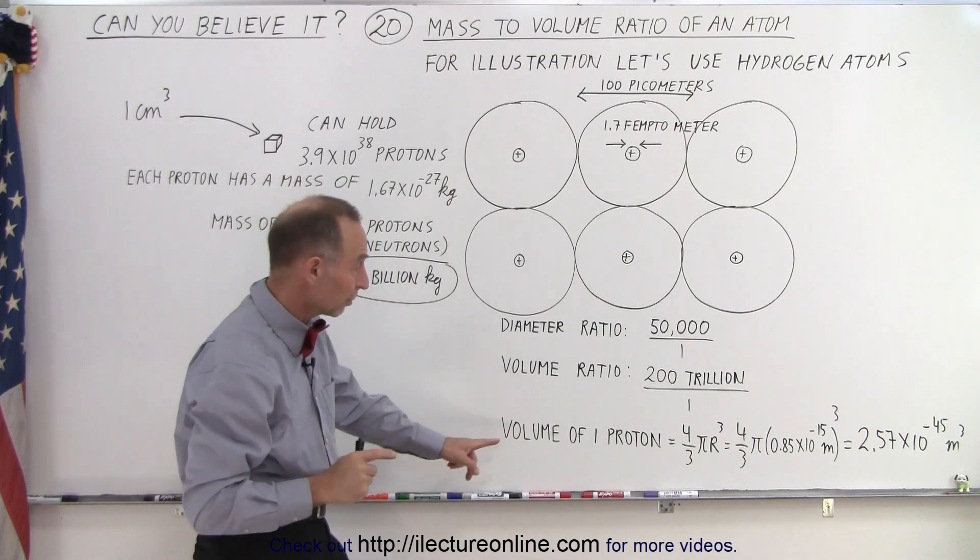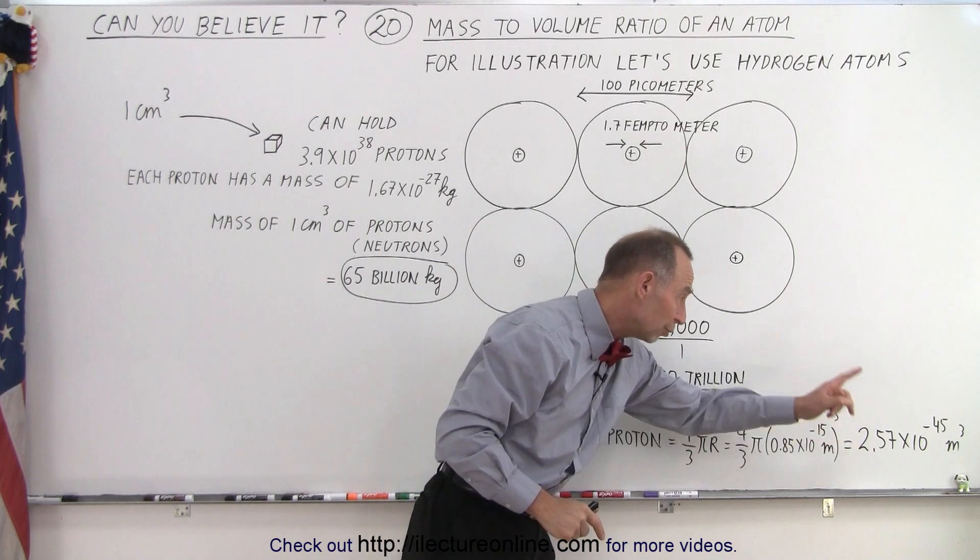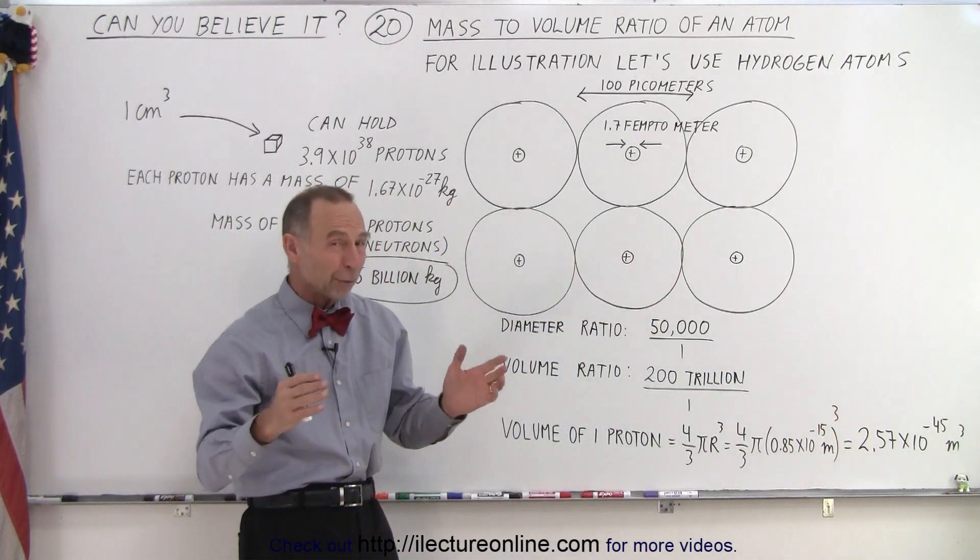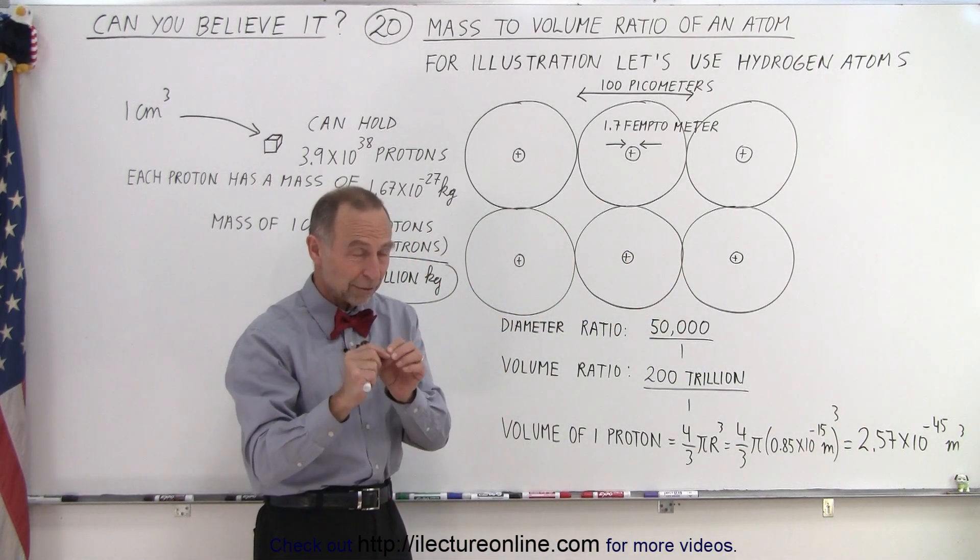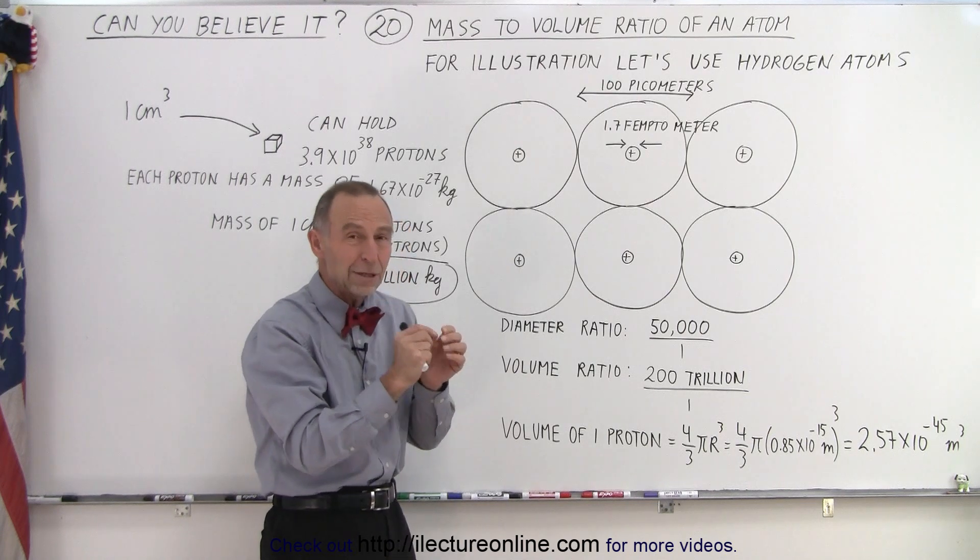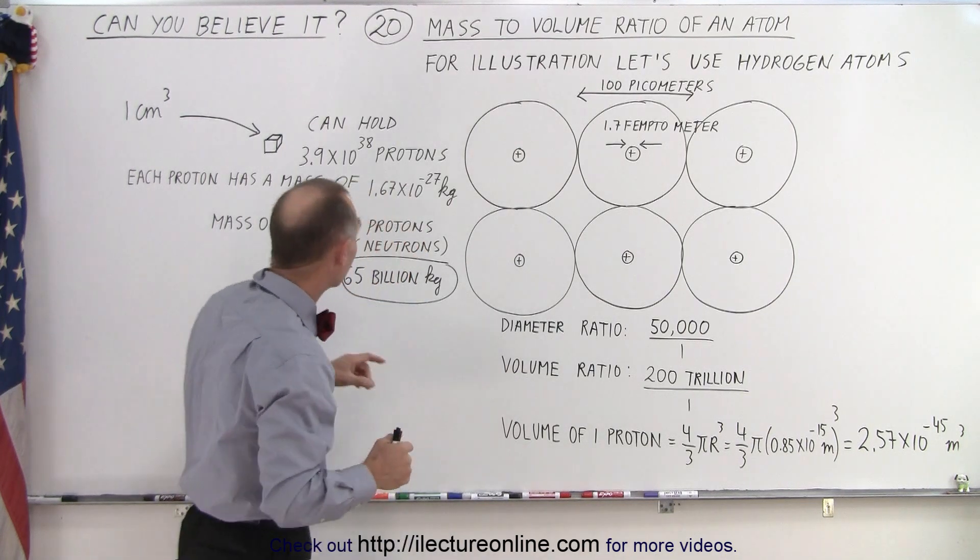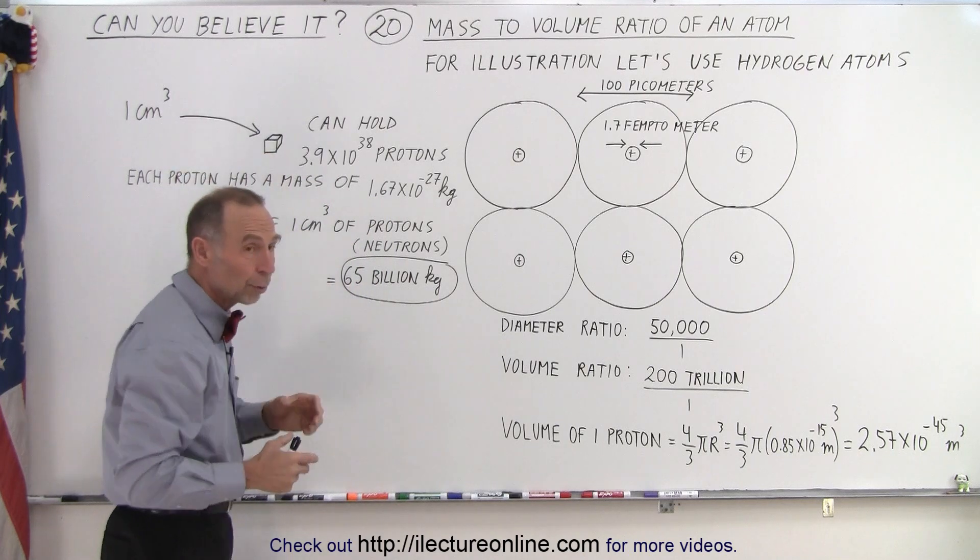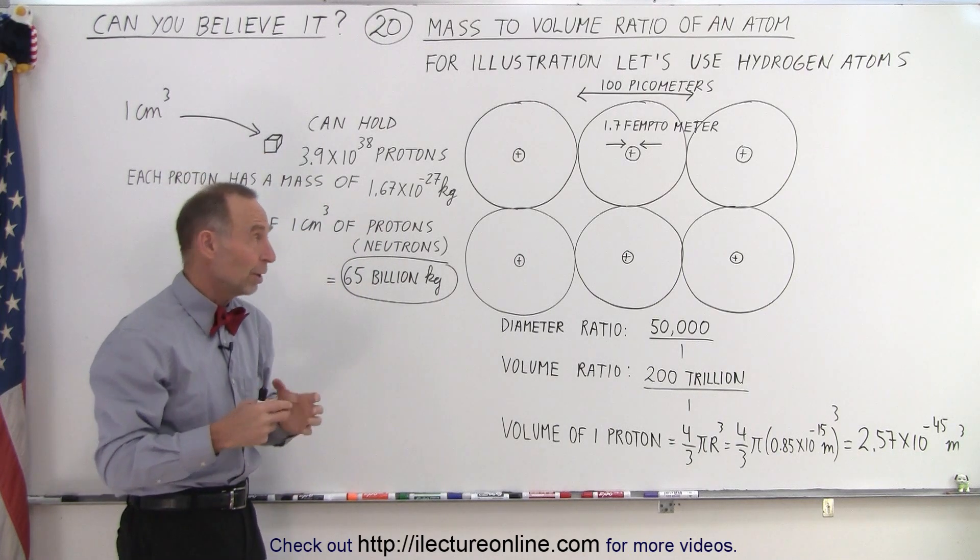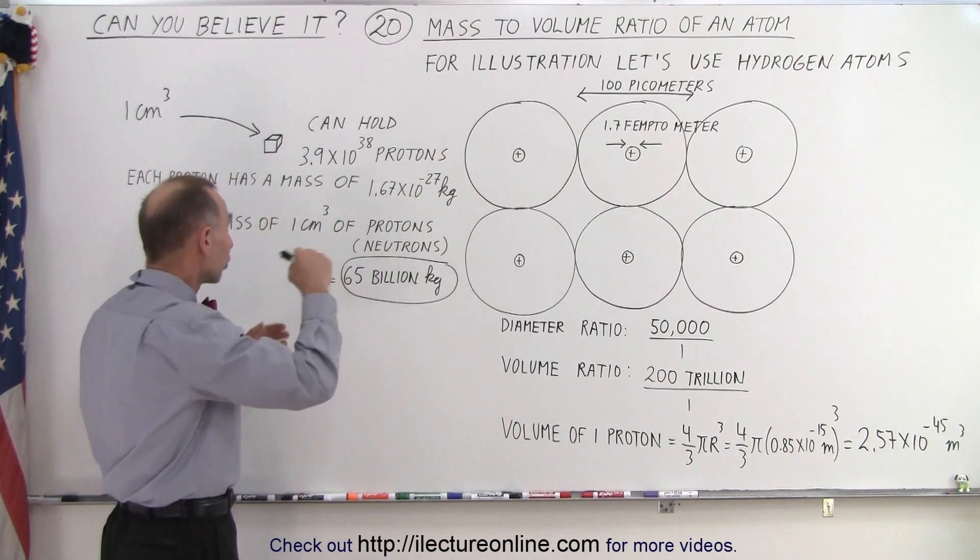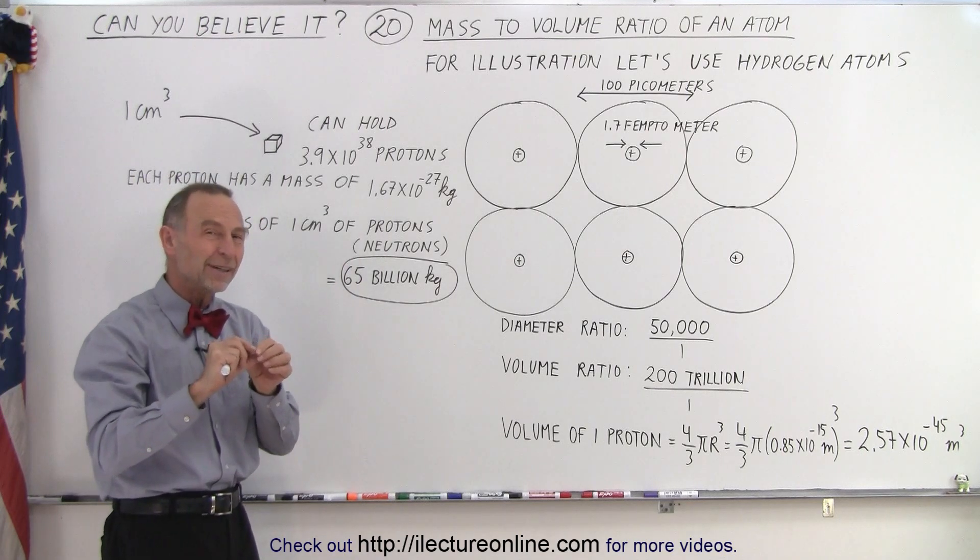Now notice that if we calculate the volume of a single proton, which is about 2.5 times 10 to the minus 45 cubic meters—so the volume of a proton is enormously small—then we can imagine that there's a lot of protons that could fit into a cubic centimeter.